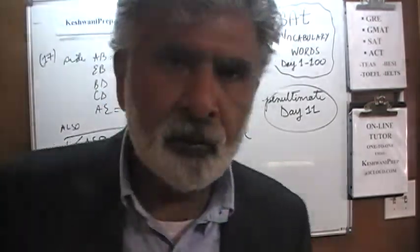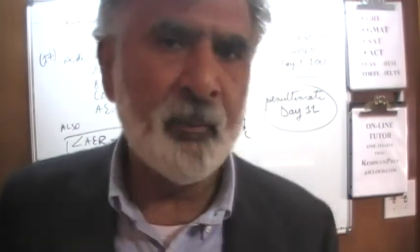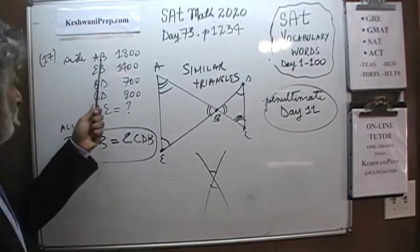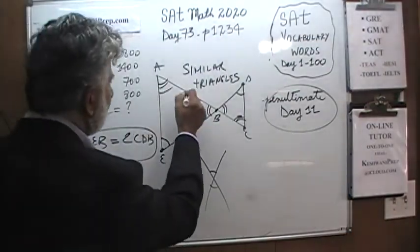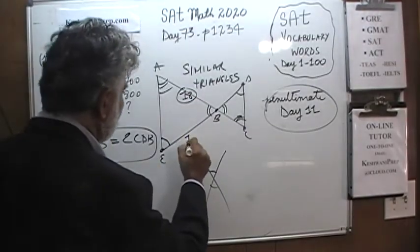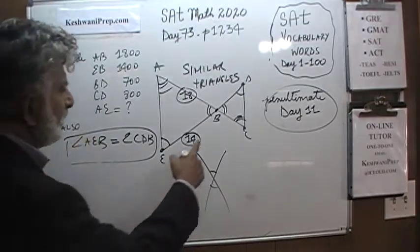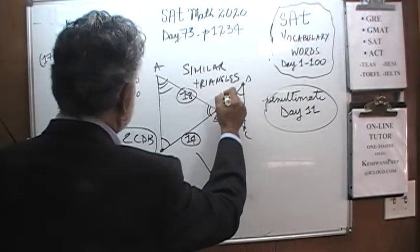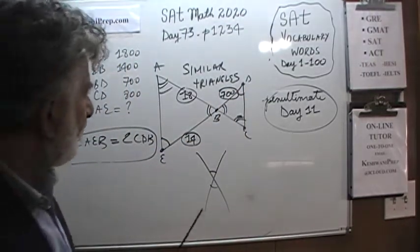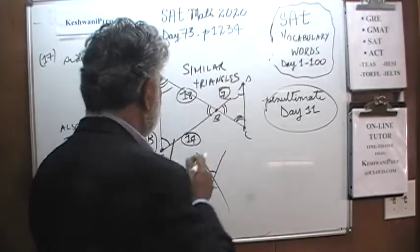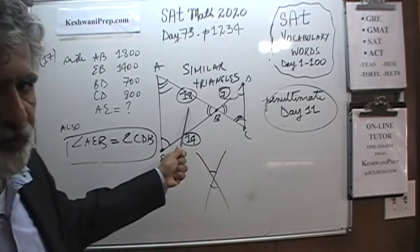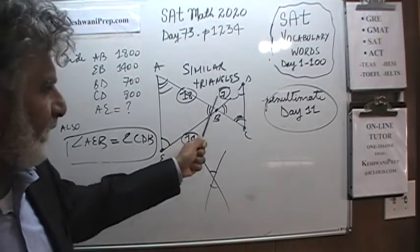What does it mean for two triangles to be similar? It just means that the sides are in proportion — the exact same proportion for all sides. For example, AB is 1800, EB is 1400, and BD is 700. This is 7 and this is 14, which means this big triangle is twice the size of that triangle. Every side of this triangle is 2 times as much as every side of that triangle.